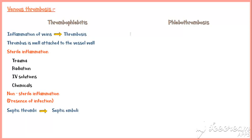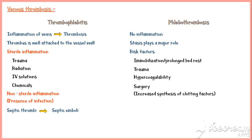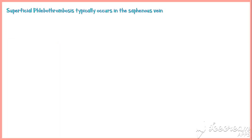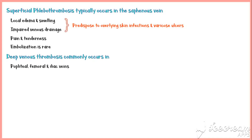In phlebothrombosis, there is no inflammation; stasis plays a major role. Risk factors include immobilization, prolonged bed rest, trauma, hypercoagulability, surgery, increased synthesis of clotting factors by the liver, and heart failure. Phlebothrombosis predominantly occurs in superficial and deep leg veins. Superficial phlebothrombosis typically occurs in the saphenous vein, causing local edema, swelling, impaired venous drainage, and pain. Deep venous thrombosis commonly occurs in popliteal, femoral, and iliac veins, and most often embolizes to the lungs giving rise to pulmonary infarctions.